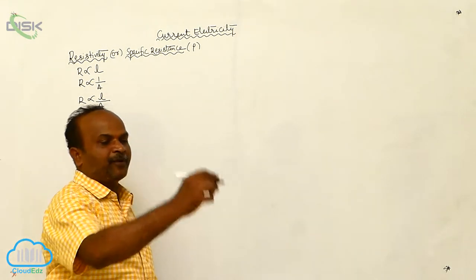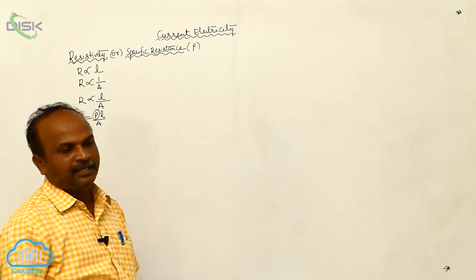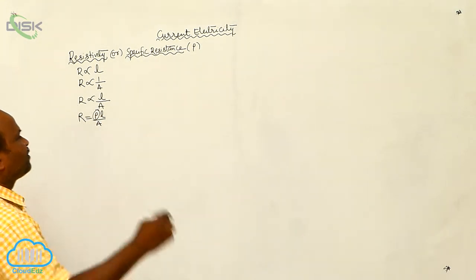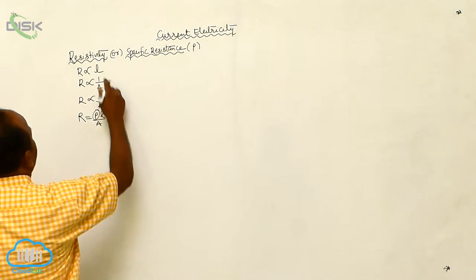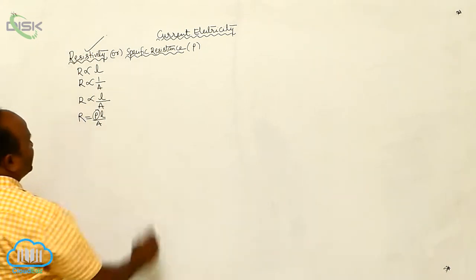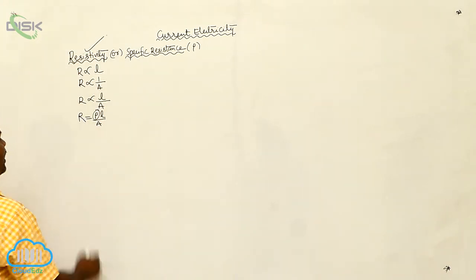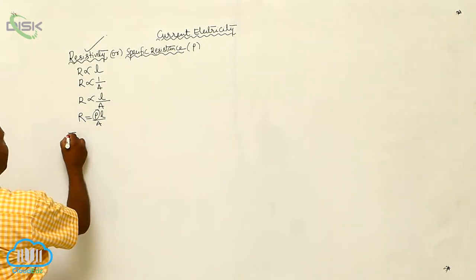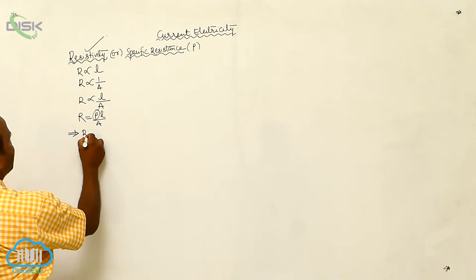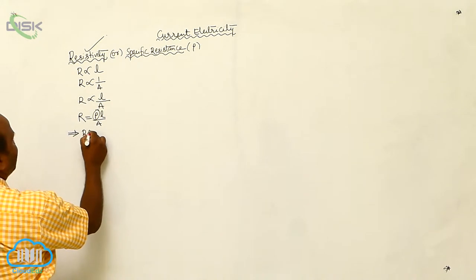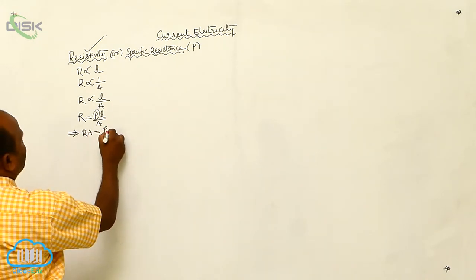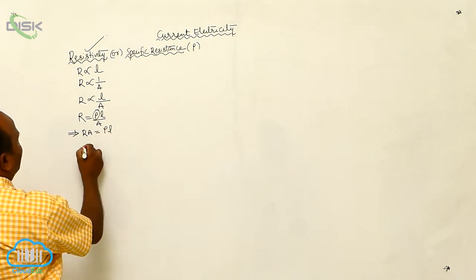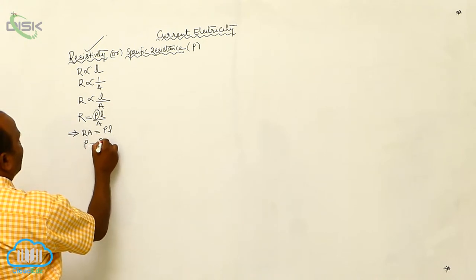This proportionality constant is called resistivity. From this formula, by cross multiplication, R into A equals rho into L, therefore rho equals R times A divided by L.